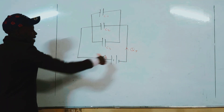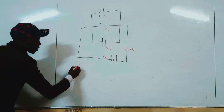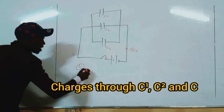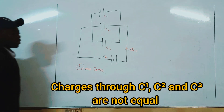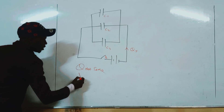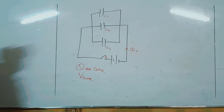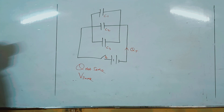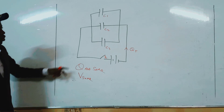They will then combine and come back. So it is right to say charges are not the same through each of the capacitors, but voltage is the same. As long as charges are not the same, voltage must be the same — one thing must be the same, and one must not. So we form an equation of total charge.